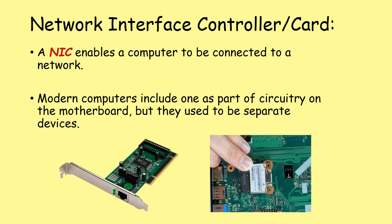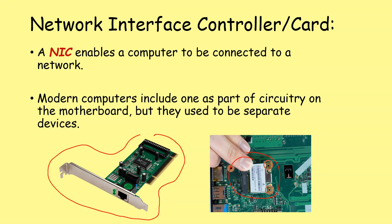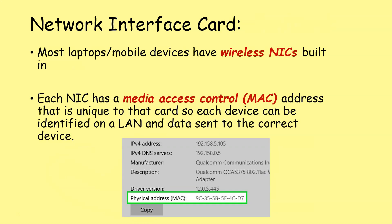Modern computers include one as part of the circuitry on their motherboard, but they used to be separate devices — cards that you'd plug into your laptop or desktop to enable them to connect to an ethernet cable or to a wi-fi access point. Most laptops and mobile devices have wireless NICs built into them, and each NIC has a media access control MAC address that is unique to that card, so that each device can be identified on a LAN and data sent to the correct device.